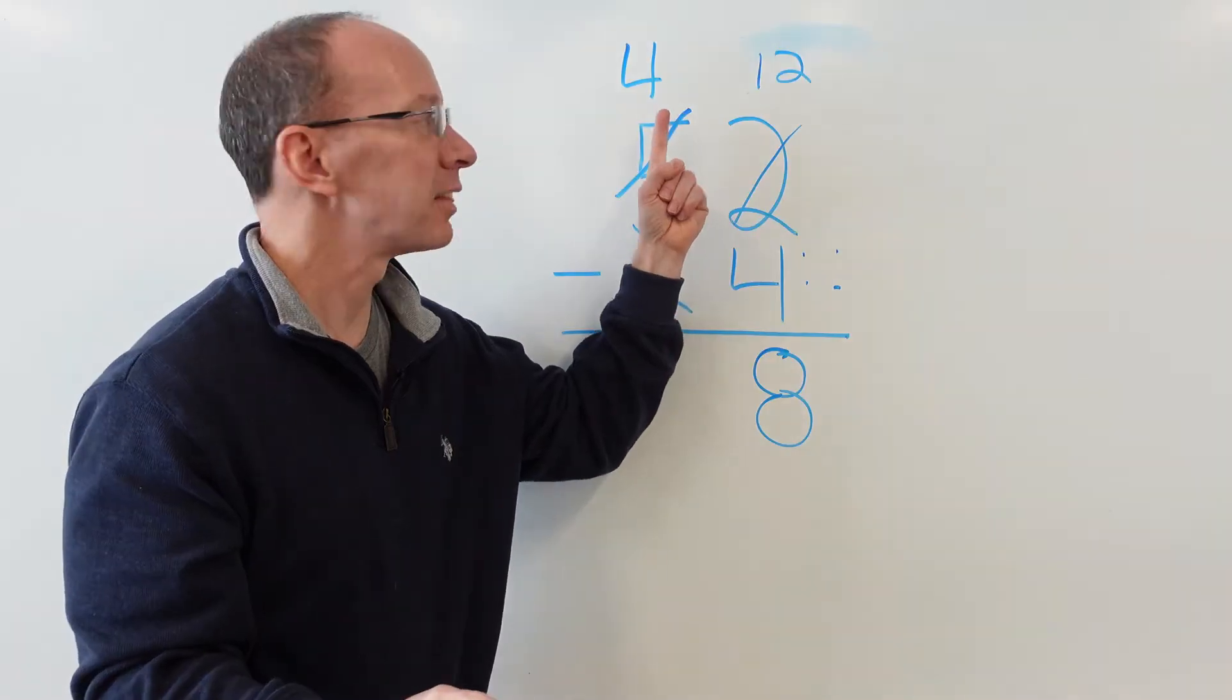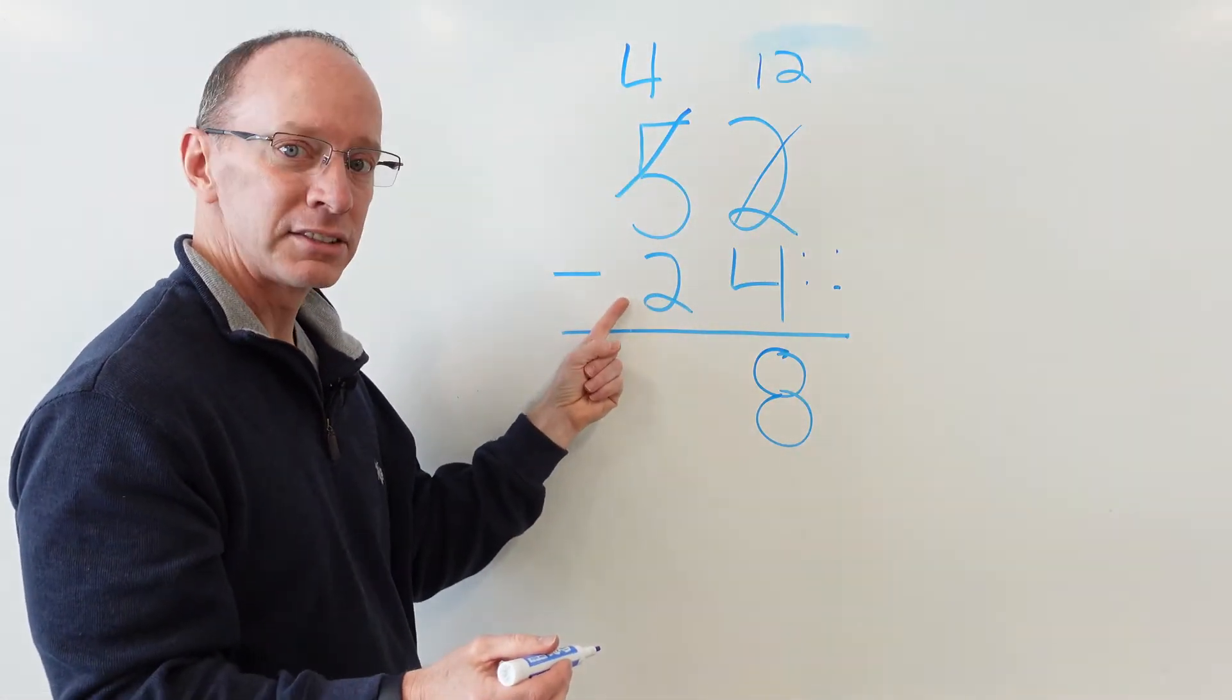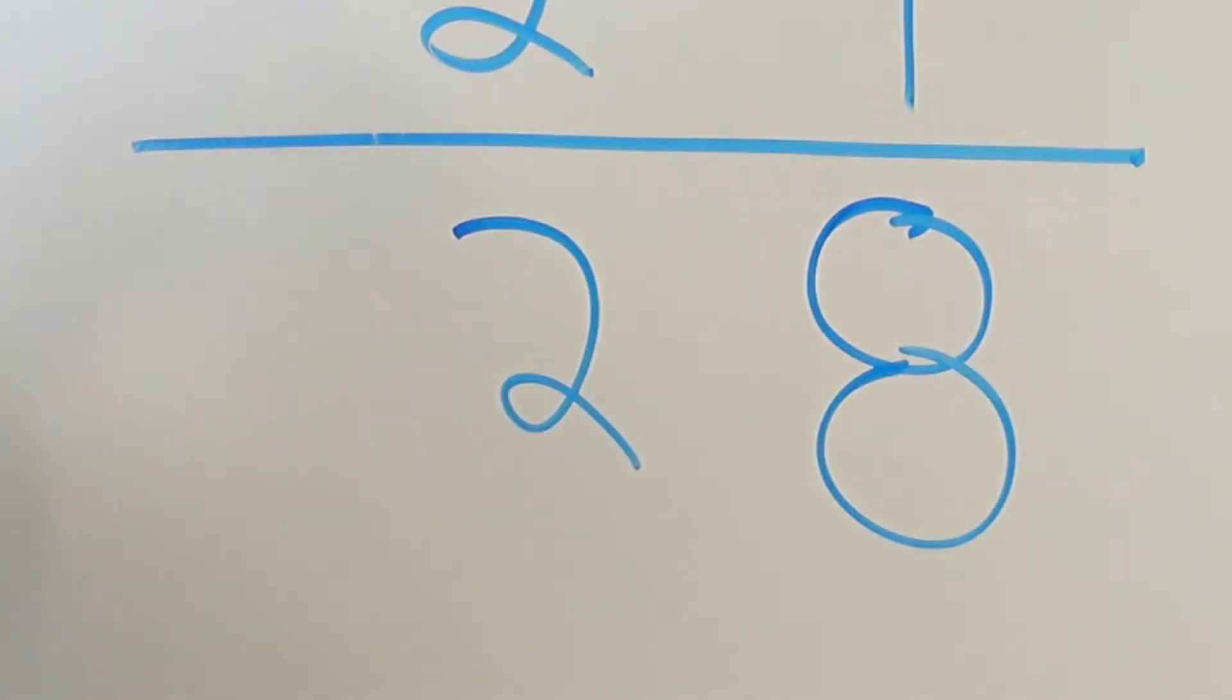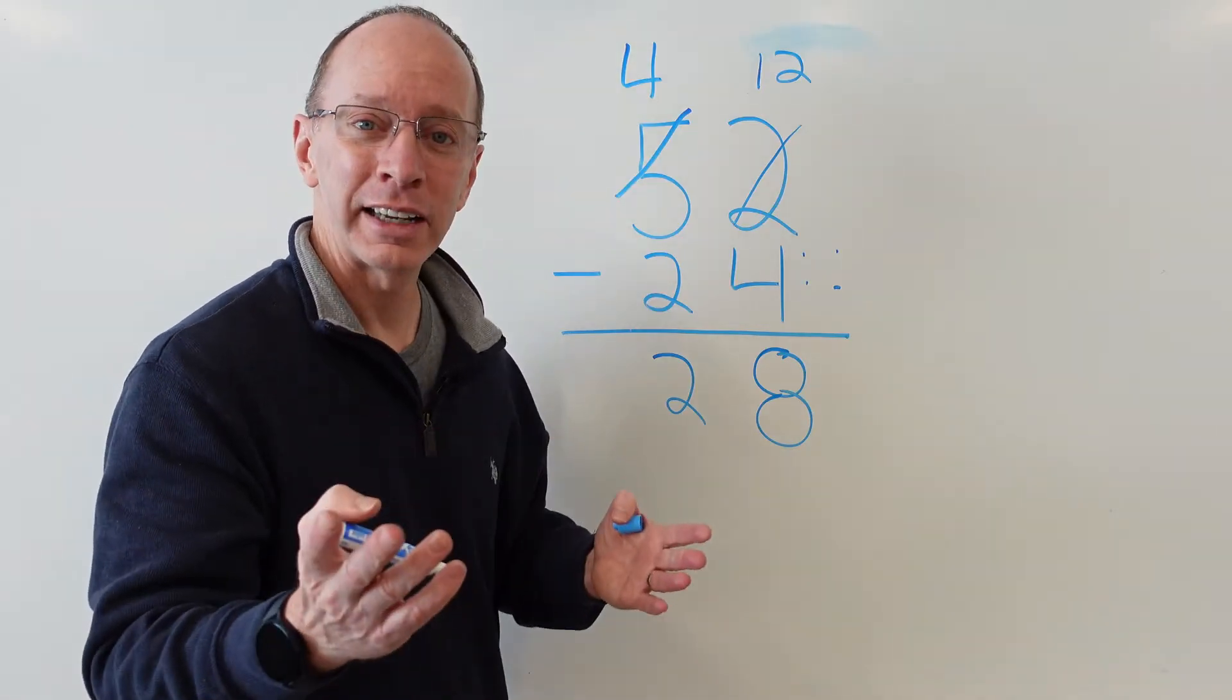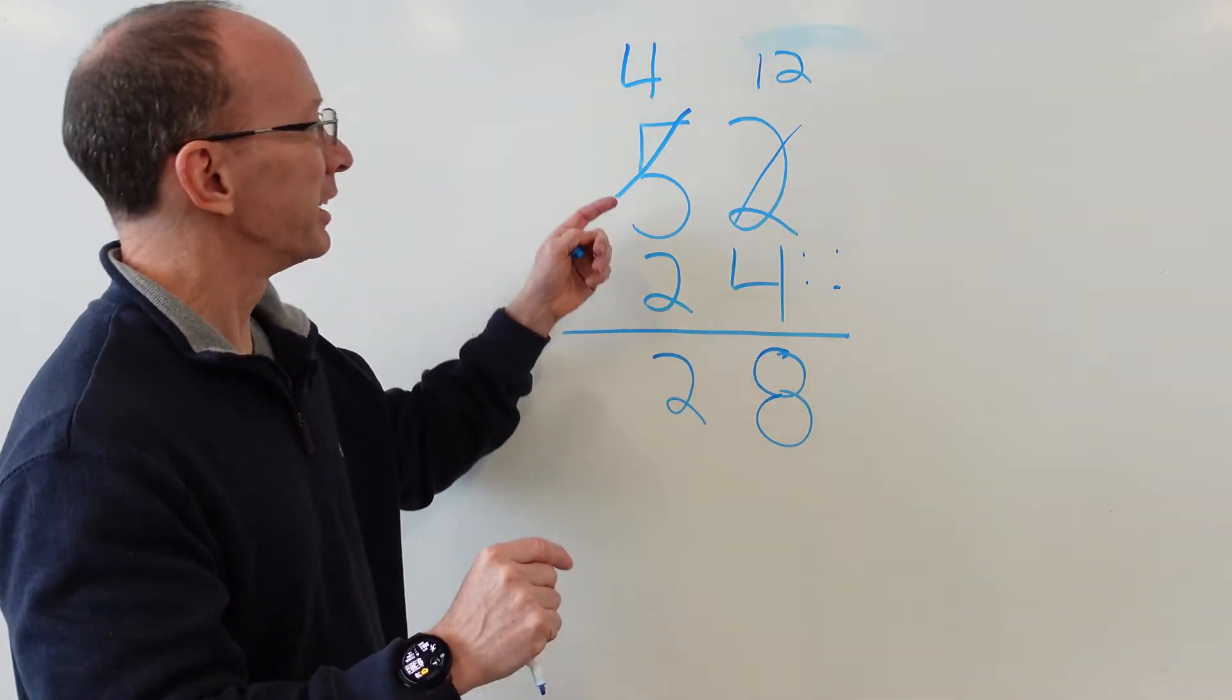So now I subtract 12 minus 4. 12 minus 4 is 8, 9, 10, 11, 12. I always like to look at numbers with dots. So I put 8 right here. And then I subtract the tens. So I have 4 minus 2, which would be 2. Uno, dos. And my friend Gabriel, he knows Spanish. Hola Gabriel, como estas? Muy bien, muy bien. Let's do another problem. Ready to do it? Yeah, let's do it.